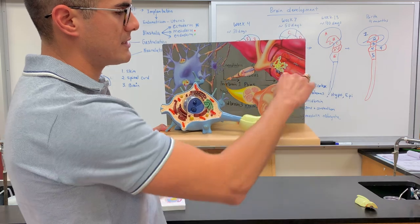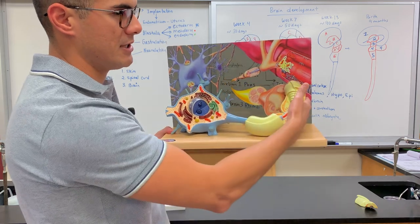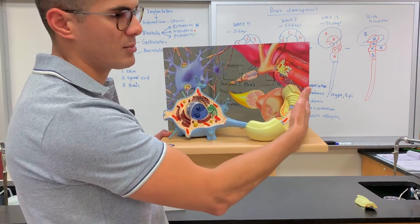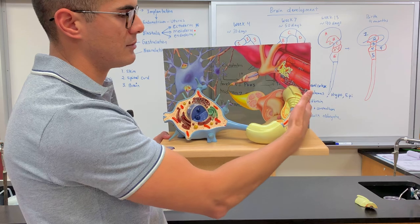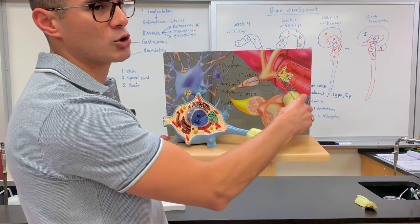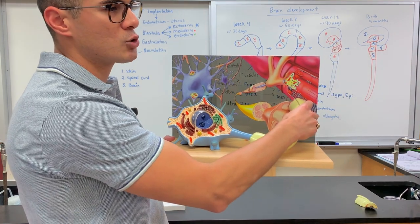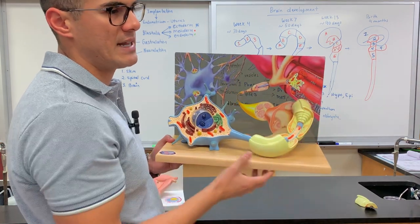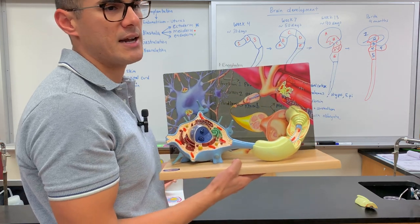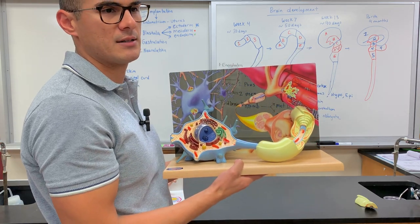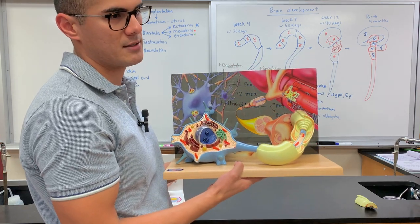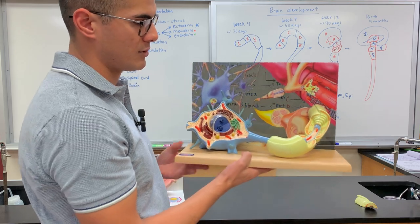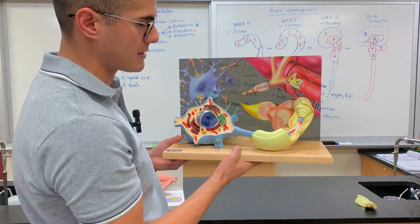This is the myelin sheath, but because it's within the peripheral nervous system, we call it the Schwann cell. The reason it's given that name is because it's named after the scientist who discovered it — so he gets credit with the Schwann cell.